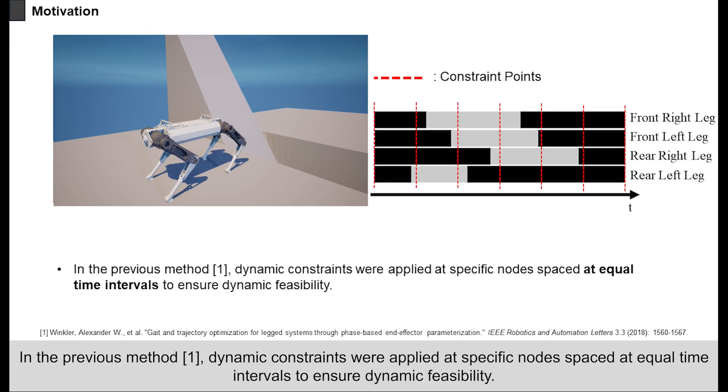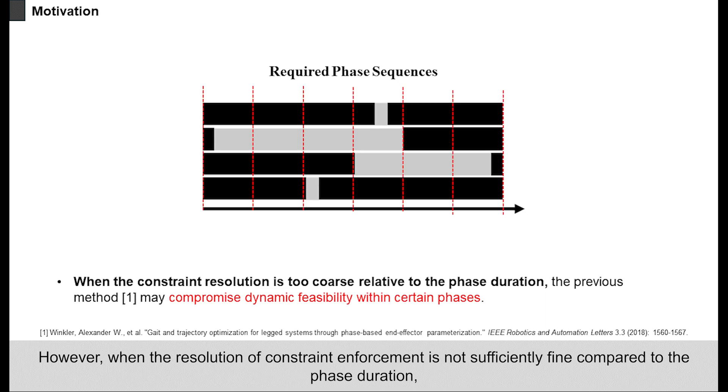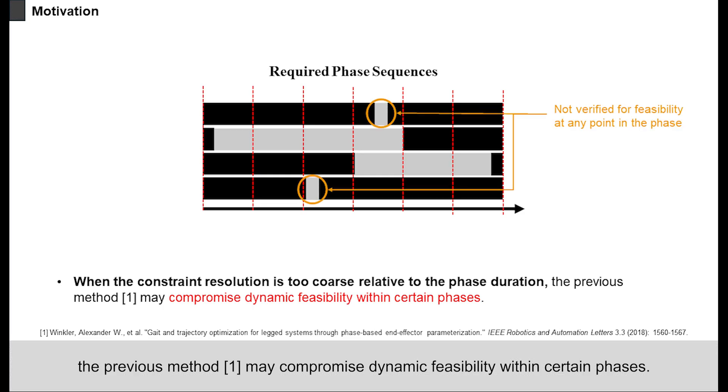In the previous method, dynamic constraints were applied at specific nodes spaced at equal time intervals to ensure dynamic feasibility. However, when the resolution of constraint enforcement is not sufficiently fine compared to the phase duration, the previous method may compromise dynamic feasibility within certain phases.